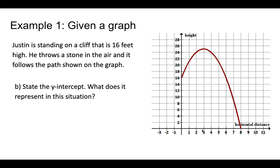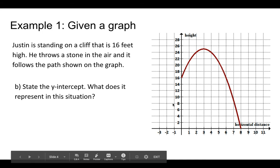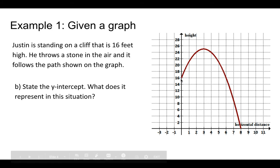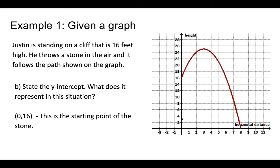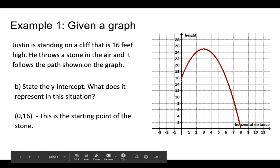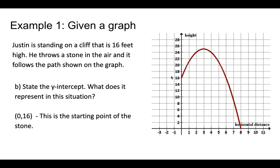Second question: what's the y-intercept and what does it represent? The y-intercept is where the graph goes through the y-axis. Again, this can be represented as a point. The x value of this point is 0 and y value is 16, so the y-intercept is (0, 16). What does this represent? This is the starting point of the stone, or you could say this is where Justin throws the stone from.